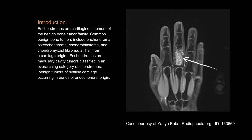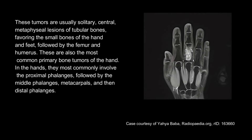Enchondromas are medullary cavity tumors classified in an overarching category of chondromas — benign tumors of hyaline cartilage occurring in bones of endochondral origin. These tumors are usually solitary, central, metaphyseal lesions of tubular bones, favoring the small bones of the hand and feet, followed by the femur and humerus. These are also the most common primary bone tumors of the hand.